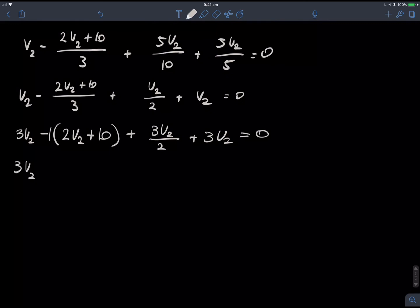Now, I'll just expand that bracket by timesing everything in the bracket. So, you can imagine like this is a 1. So, we've got minus 2V2 there, minus 10, plus 3V2 on 2, plus 3V2. Alright. So, straight away, I'm just going to group all the V2s together.